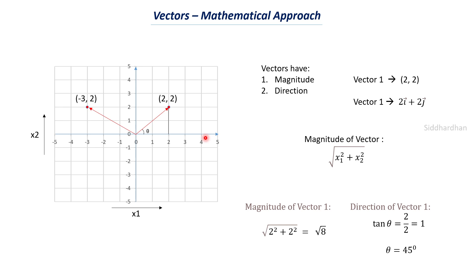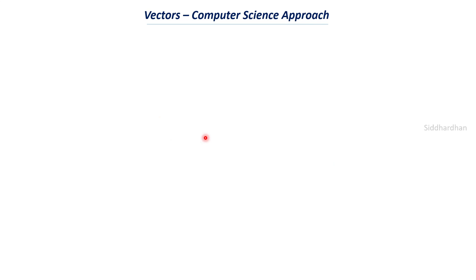This understanding is very important because in machine learning, data and computations are represented in the form of vectors and matrices. Understanding these concepts helps us see what is happening inside a machine learning model, since ML models implement several linear algebraic equations and statistical approaches. Now let's see how we understand vectors from a computer science approach, which is similar to the mathematical approach but framed differently.